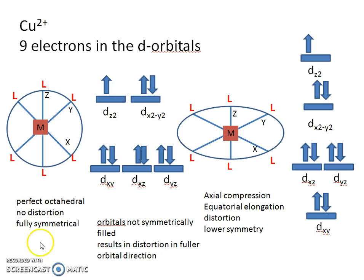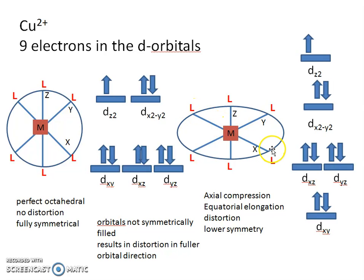Now we consider a different choice for placing the ninth electron. Instead of putting two electrons in the d_z², we place two electrons in the d_(x²-y²) orbital, which means this orbital is now fuller than the d_z². Therefore there is more repulsion in the x and y direction, resulting in elongation in the x and y direction. This means the bond length between the metal and the donor atom of the ligand has increased in the x and y direction, and after distortion there is less repulsion.